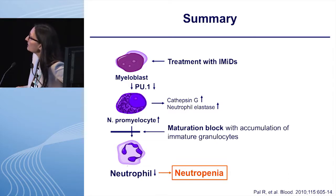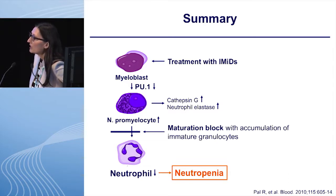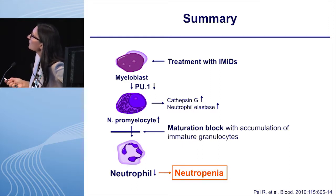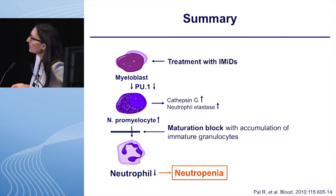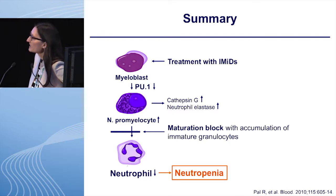In summary, we think that PU.1 is a critical factor involved in the maturation of neutrophils. The downregulation of PU.1 by IMIDs inhibits maturation with an accumulation of immature granulocytes. Those immature granulocytes cannot exit the bone marrow, which subsequently leads to the development of neutropenia.